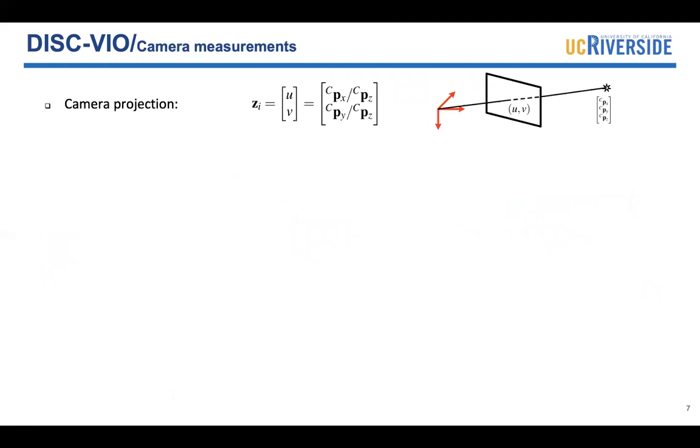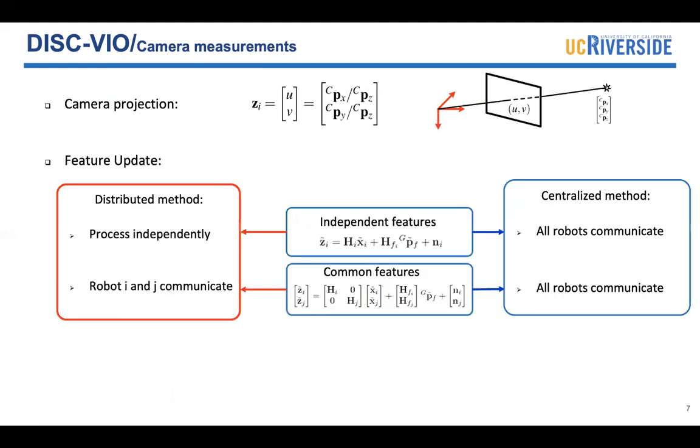Here, we can see the perspective projection camera model. And the two kinds of features, the independent features and the common features, are used to update our state. In DISC-VIO, the good thing is for the independent features, each robot can process it in the same way as a single robot case. There is no need to communicate with the other robots.